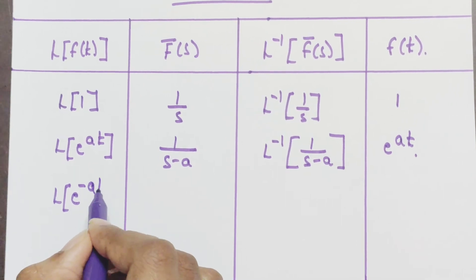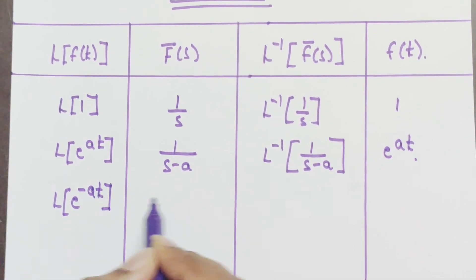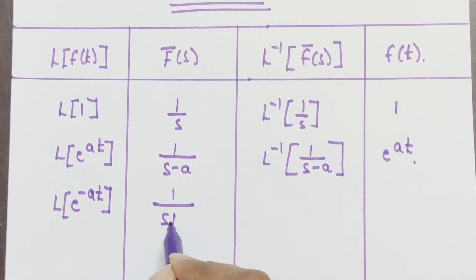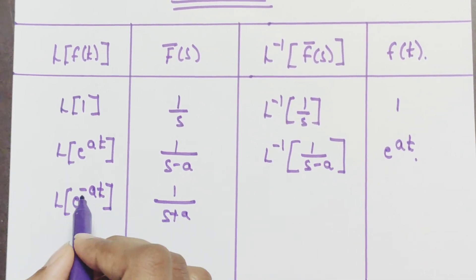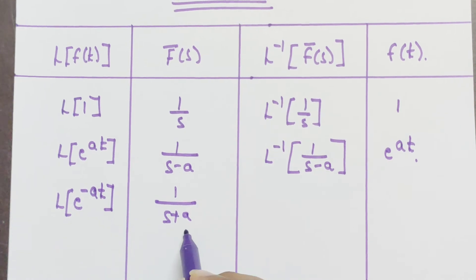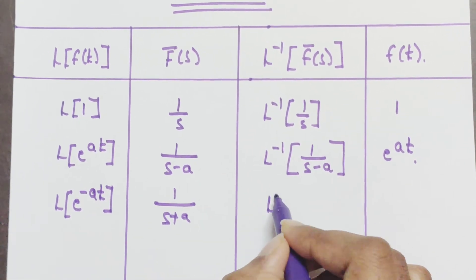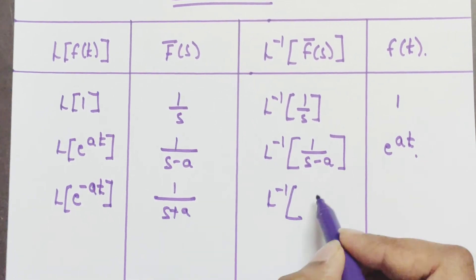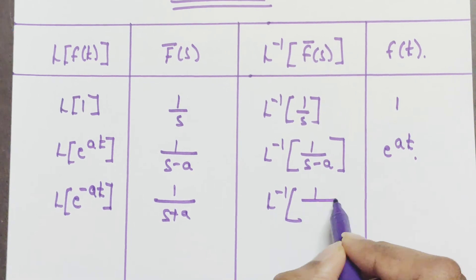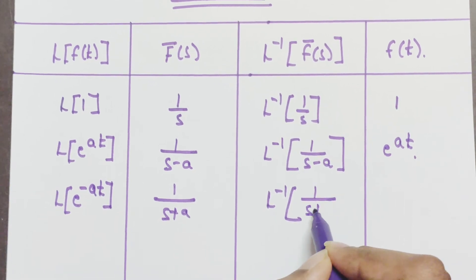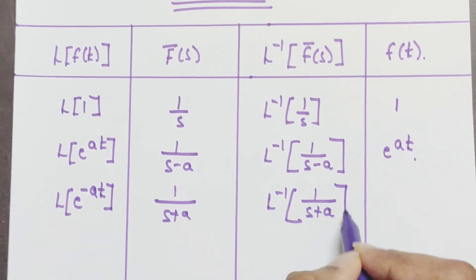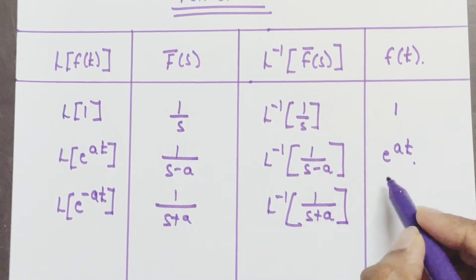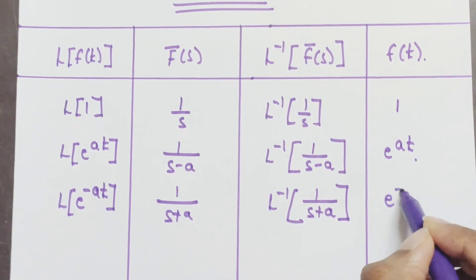For e^(−at), the Laplace transform is 1/(s + a). Here we have minus a, so applying the inverse Laplace transform to 1/(s + a), the answer is f(t) = e^(−at).